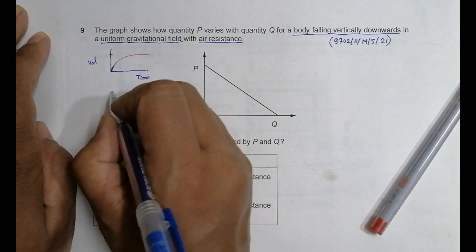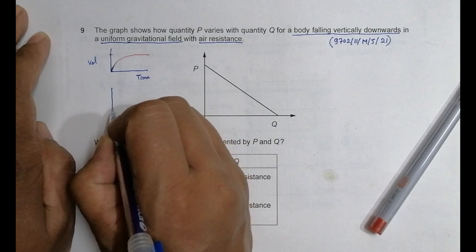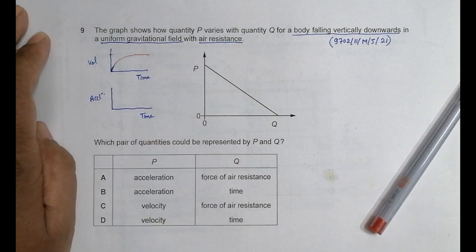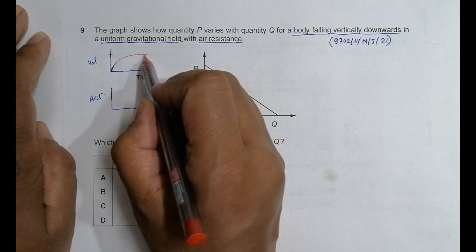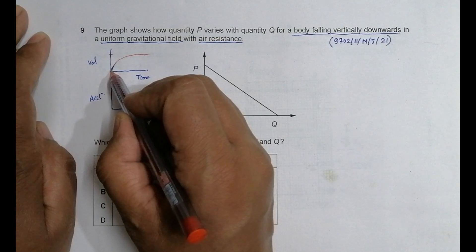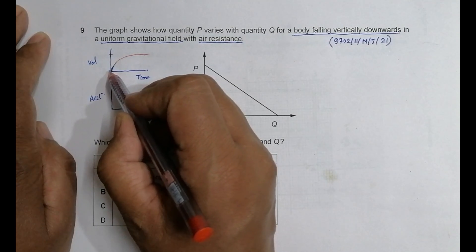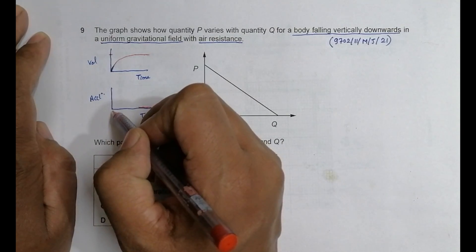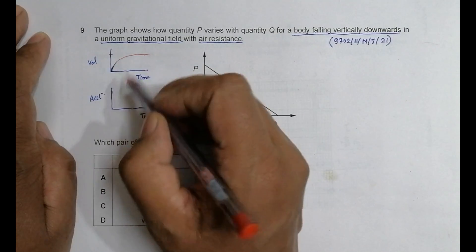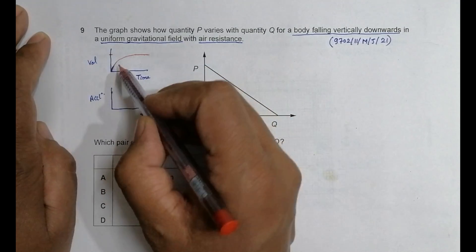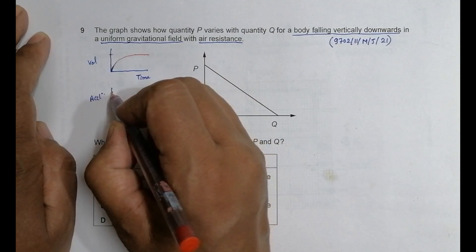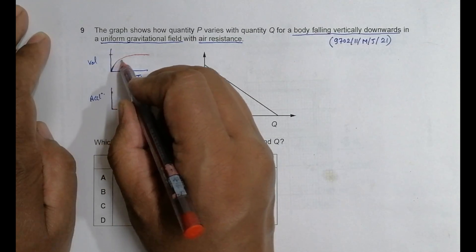The next one is acceleration versus time. Here, where velocity is constant, acceleration is zero. At the start, the slope of the v-t graph is highest, which means acceleration is highest, because acceleration equals the slope of the v-t graph. As the slope decreases, acceleration decreases — initially the rate is very high, but it goes on decreasing.